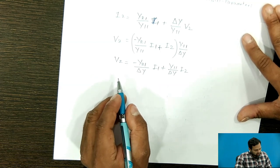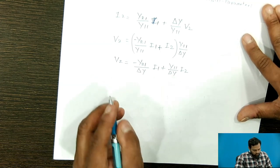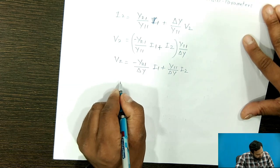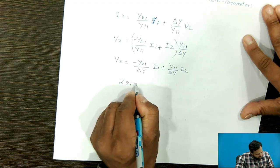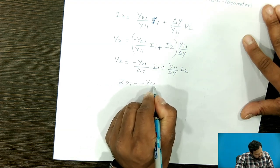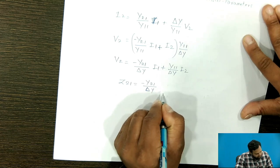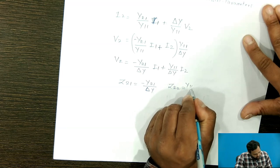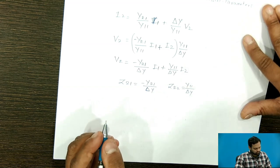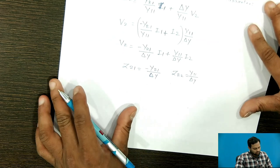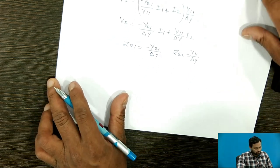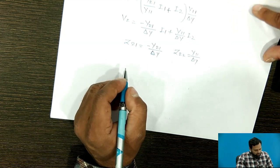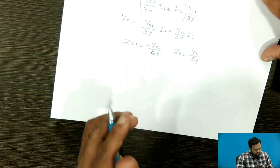Comparing this equation with the Z parameter equations, we can say that Z21 = -Y21 / ΔY and Z22 = Y11 / ΔY. Similarly, we can solve to find the values of Z11 and Z12.